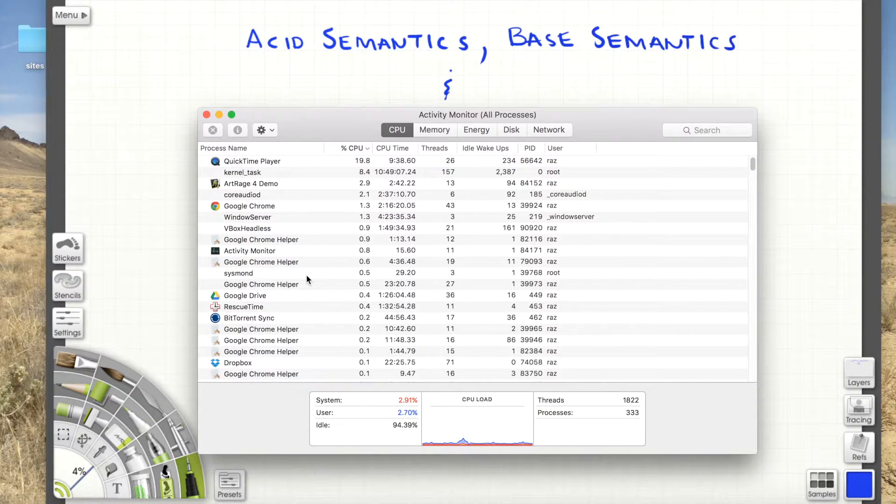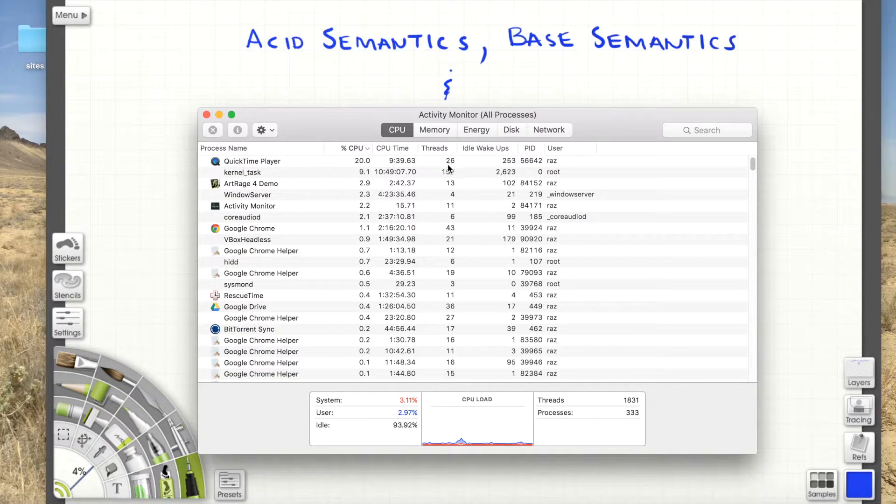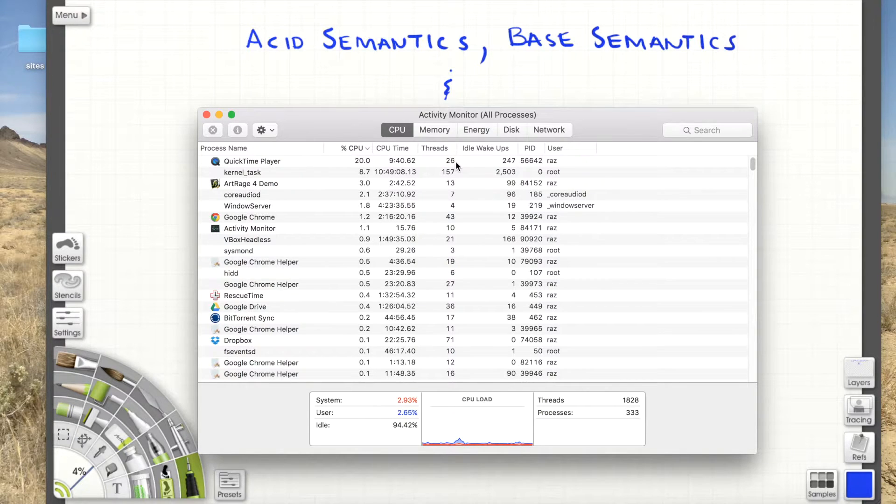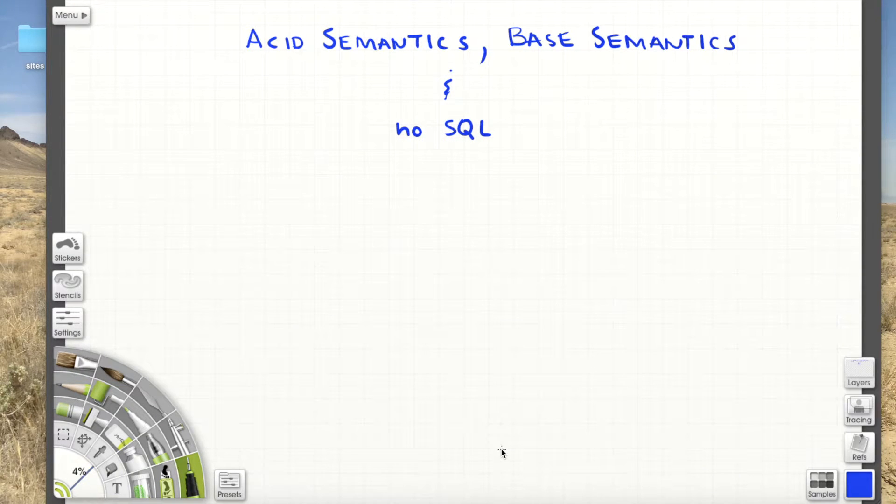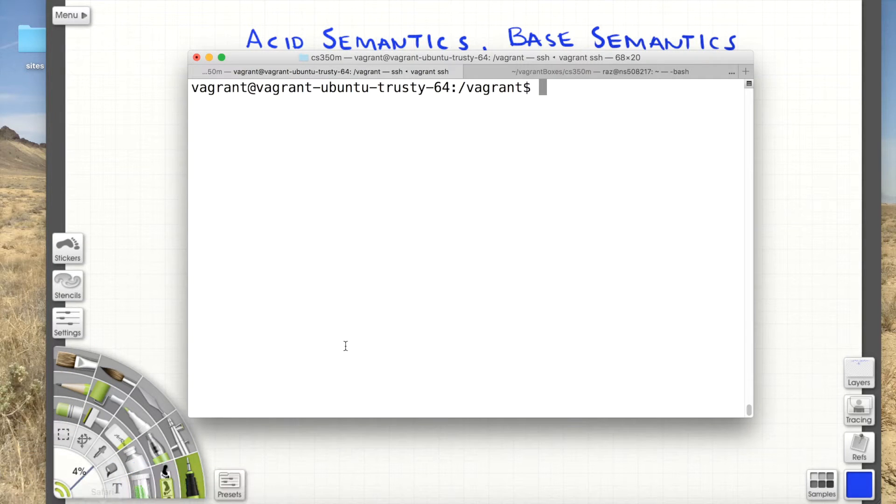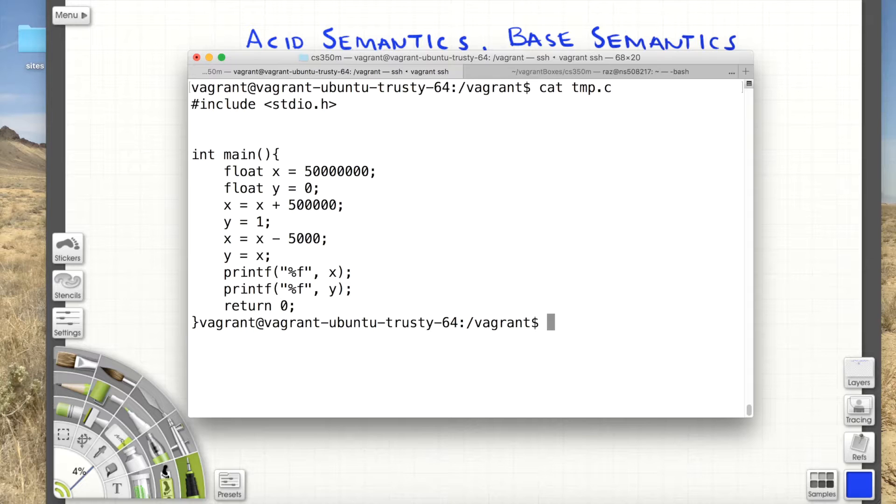Now the problem is when we have like 26 threads running on the QuickTime player, if they share memory and most programs that have multiple threads share memory, it's really tricky to write that code. And the problem is this. Let me bring that up. So here I'm on my virtual machine.